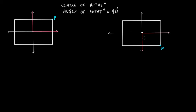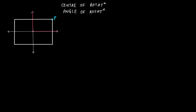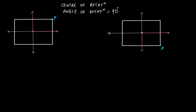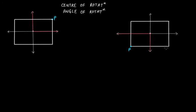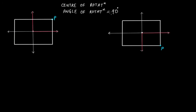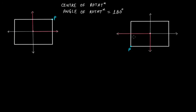We can clearly see that by every increment of 90 degrees of rotation, we are going to get rotational symmetry. If we further rotate it by 90 degrees, this point comes here and that point comes here. We have now moved a total of 180 degrees. At an angle of rotation of 180 degrees, the two figures are the same, so we have rotational symmetry again.